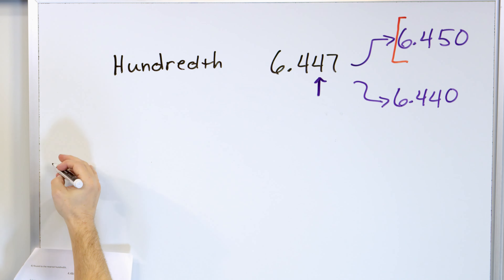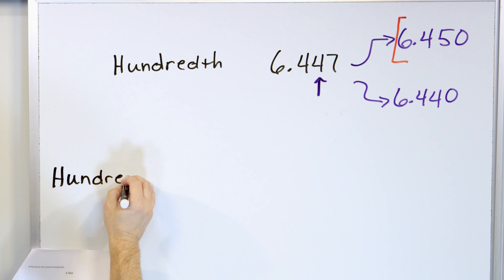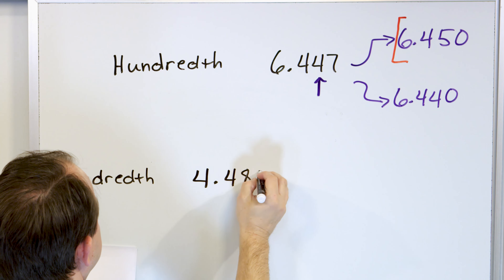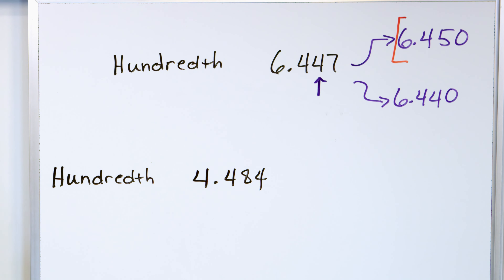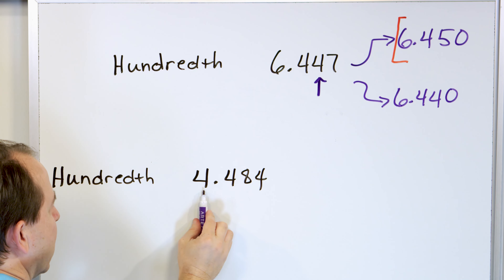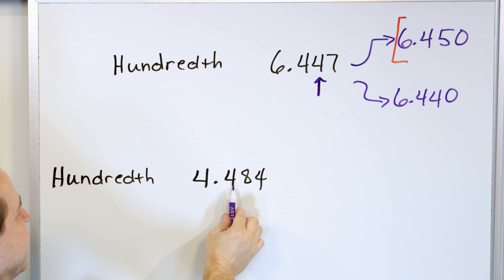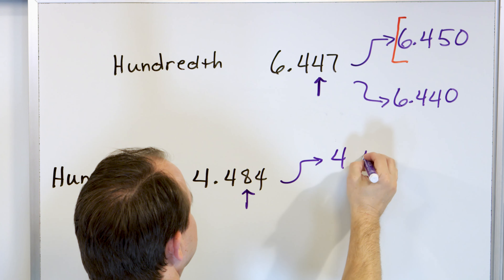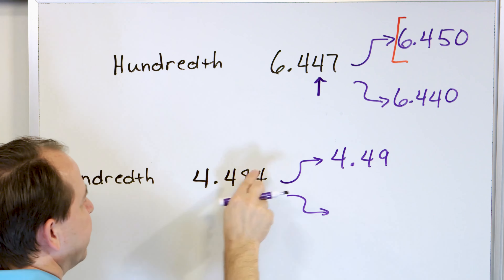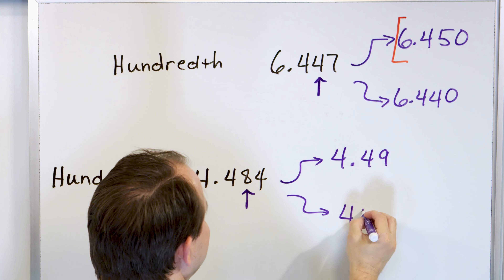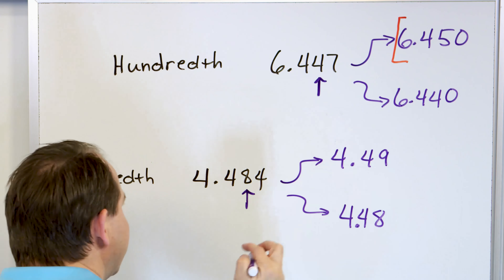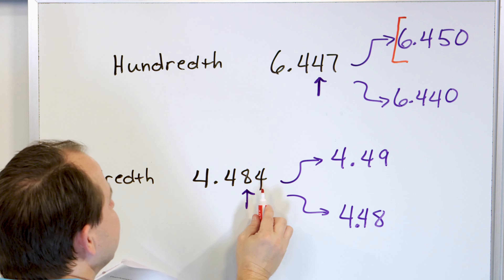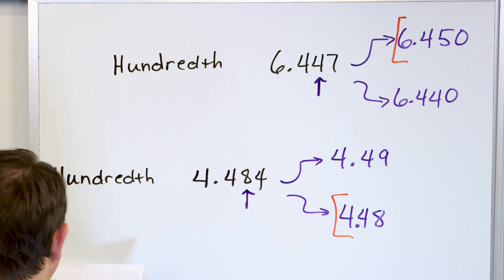Next, we're rounding four point four eight four to the nearest hundredth. Here's the whole number, then tenths, then hundredths — put an arrow at the hundredths position. We can either round up to four point four nine or stay down at four point four eight. We look next door at the digit four, which is less than five, so we stay down at four point four eight.